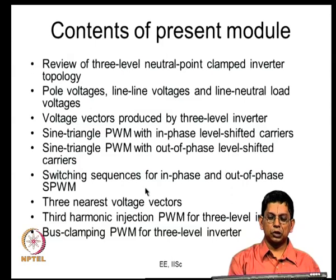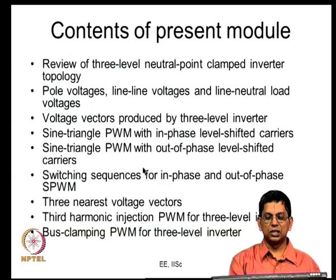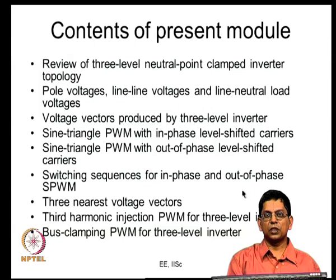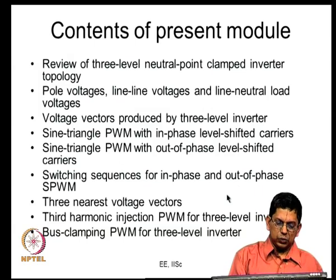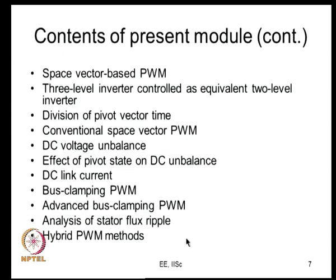Once you know what voltage vectors are being applied in a carrier comparison PWM and in what sequence, you can calculate the error voltage vector, integrate it, and do stator flux ripple analysis. In the last lecture we examined switching sequences for in-phase and out-of-phase PWM and found that when using in-phase PWM the three nearest voltage vectors are most often applied, whereas in the out-of-phase case it is not the three nearest vectors — that is one significant finding.